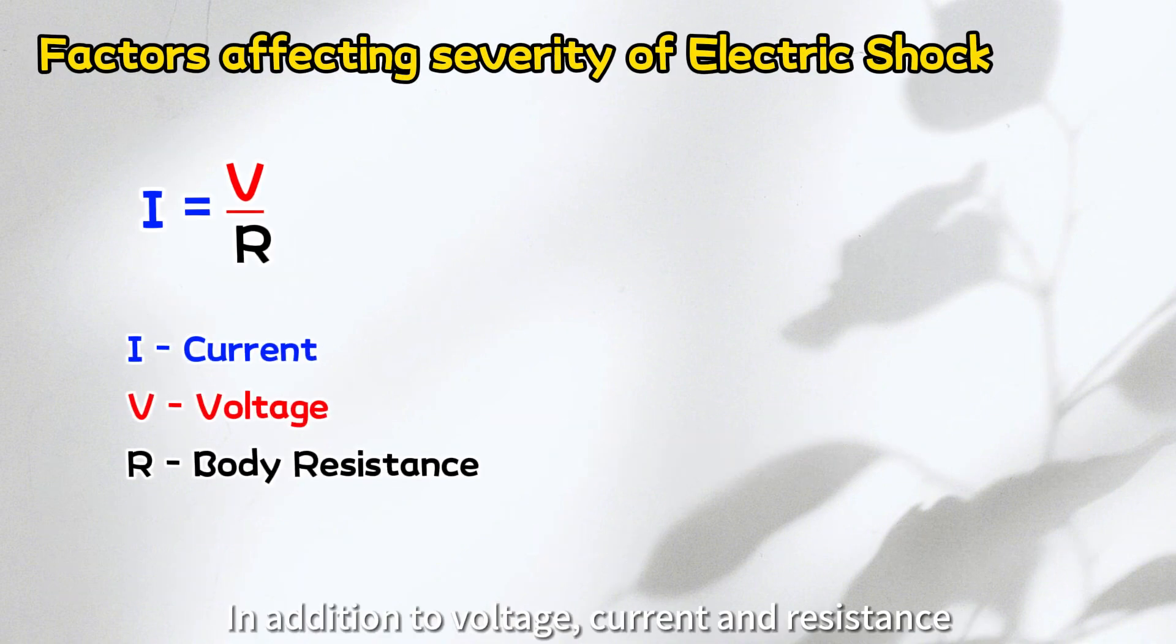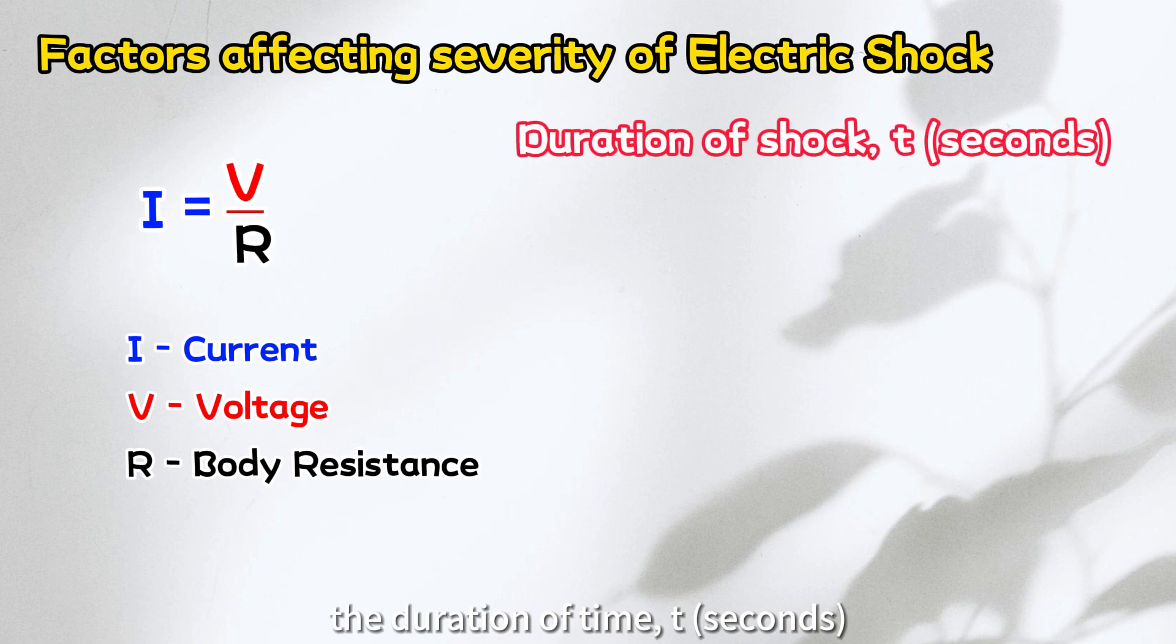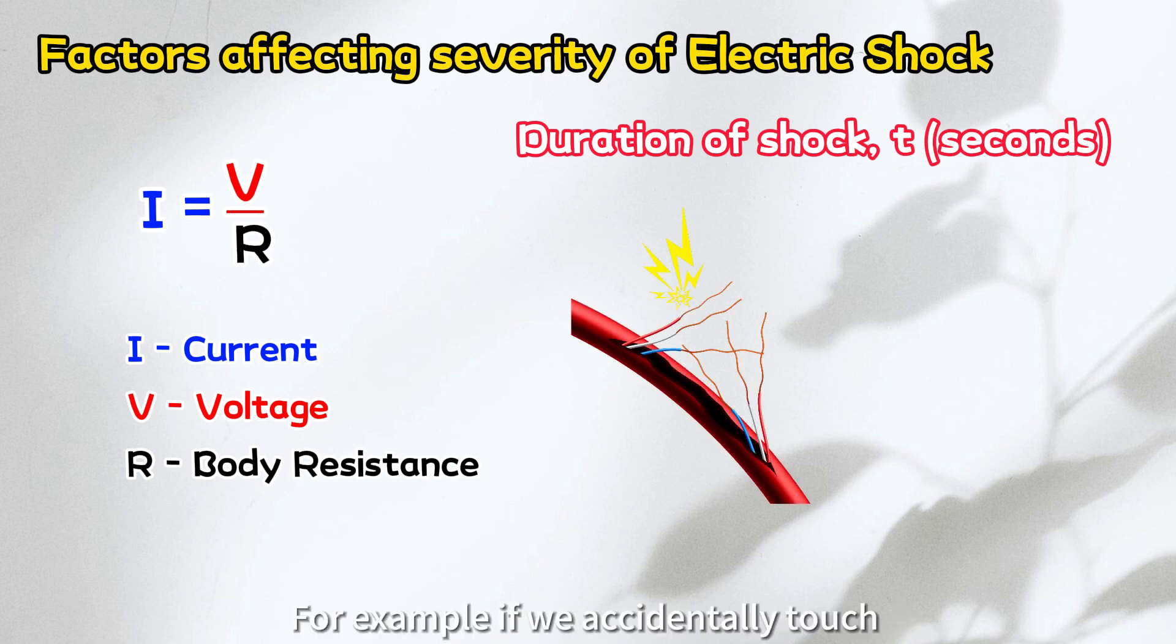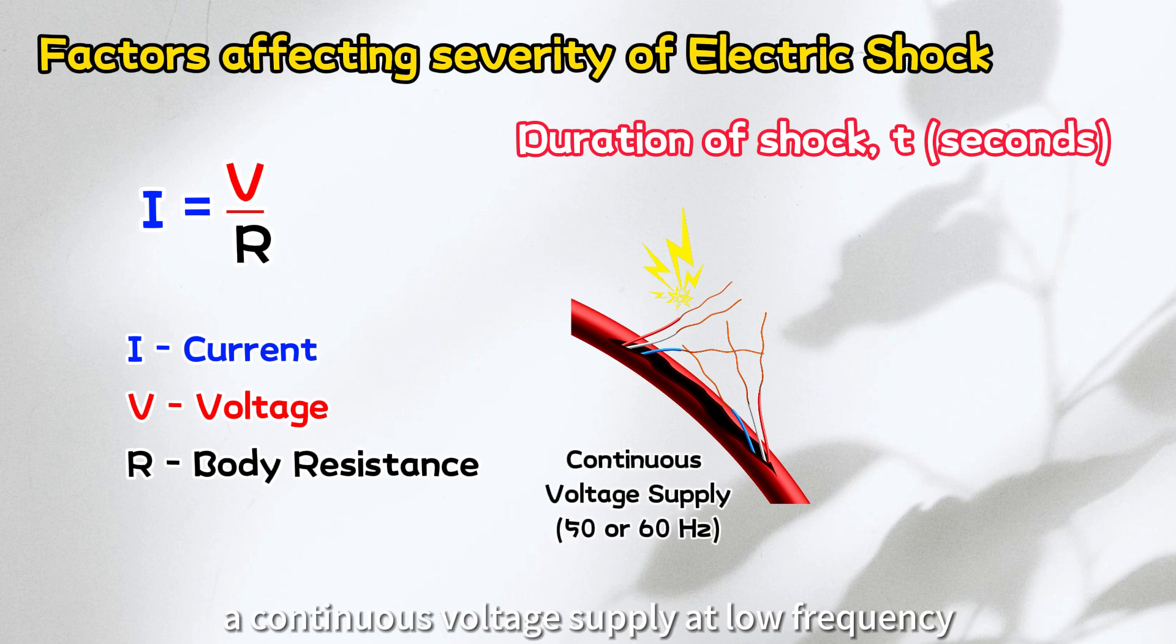In addition to voltage, current, and resistance, the duration of time the current flows through the body is also a critical factor, affecting the severity of an electric shock. For example, if we accidentally touch a faulty power cable connected to a continuous voltage supply at low frequency, typically 50 or 60 hertz.